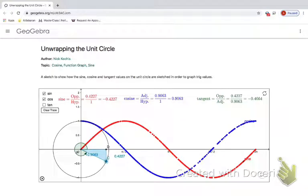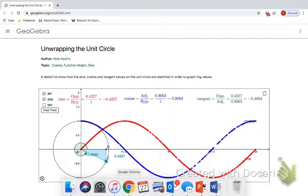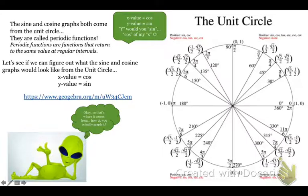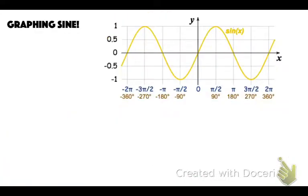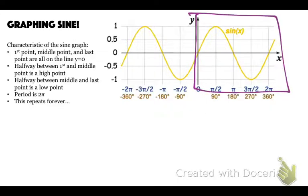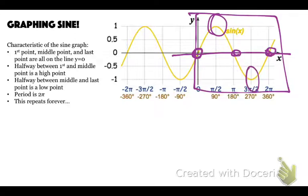I've linked this on your Canvas page so that you can see it. So that's where it comes from, but let's see how do we actually graph it. Here is our graph of sine. Some characteristics: the first, last, and middle point are the same. Looking at just one sine wave — first, last, middle are all on the same line.